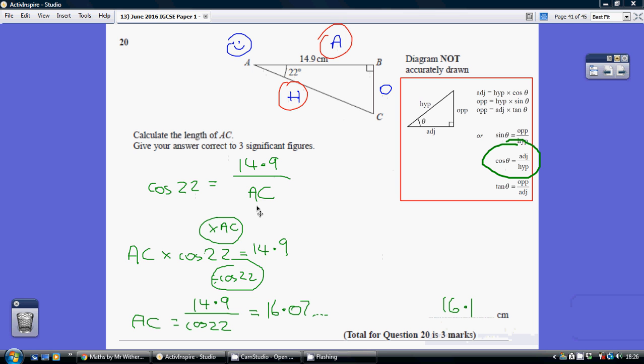Now I need to get AC on its own. This is quite complicated, it's quite nasty when it's this way round where the bit that you need to know is on the bottom. So first of all, to undo this dividing by AC, I'm going to multiply by AC, which gives me this.